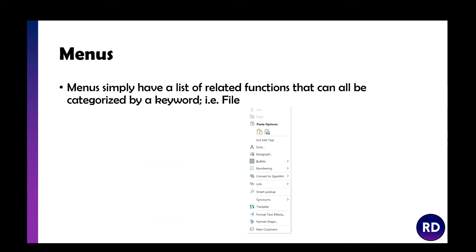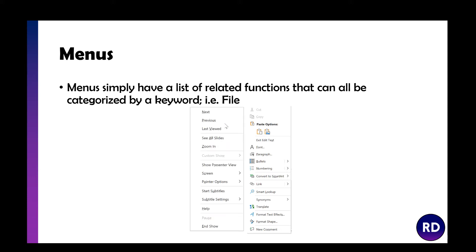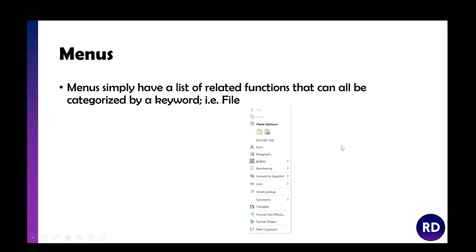Menus are essentially just a list of things you can do. If you click File you get a menu of options. If you right-click in PowerPoint it gives you options like format shape, text effects, and comments — all the things you can currently do in that context. It's a pop-up that gives you additional actions available to you.